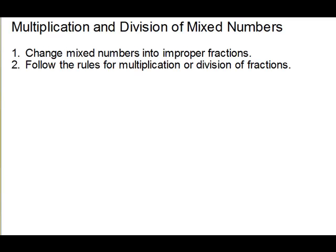Next we're going to look at the arithmetic of mixed numbers — first multiplication and division. Our rule is we will change mixed numbers into improper fractions, and then follow the rules for multiplication or division of fractions. For our first problem, we're going to multiply 5 ninths times 4 and 1 fifths. So we have to change 4 and 1 fifths to an improper fraction: 4 times 5 is 20, plus 1 is 21, put it back over 5.